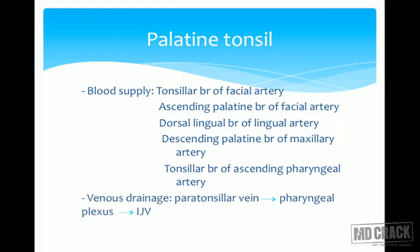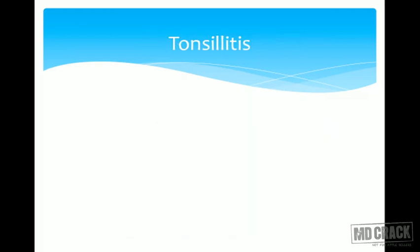Venous drainage is from the paratonsillar vein into the pharyngeal plexus and ultimately into the internal jugular vein. Lymphatic drainage of the tonsil goes to the upper deep jugulodigastric nodes.